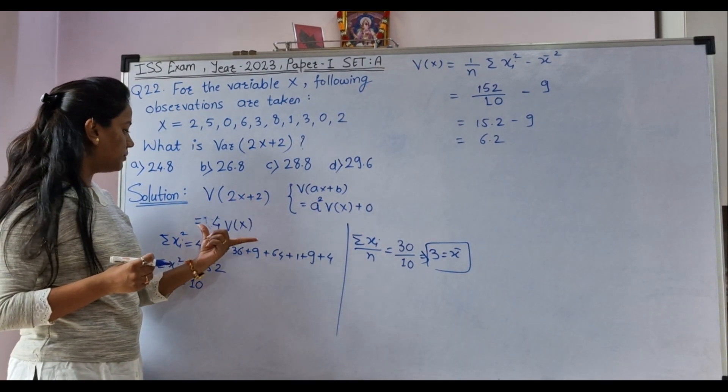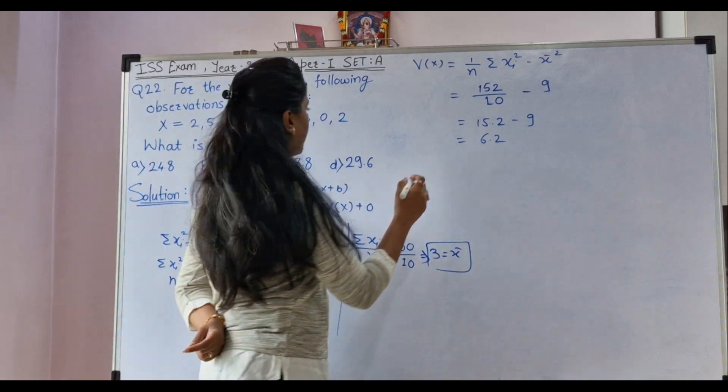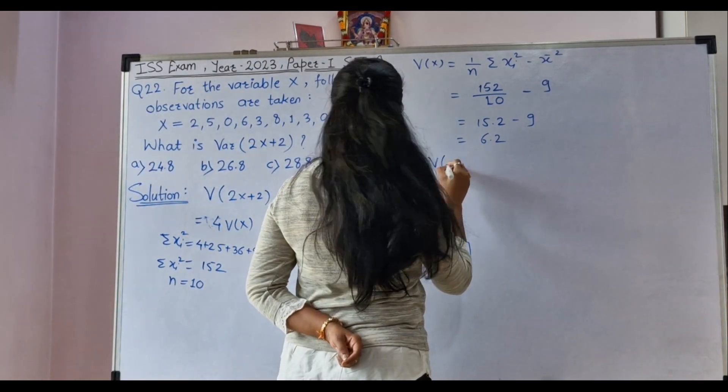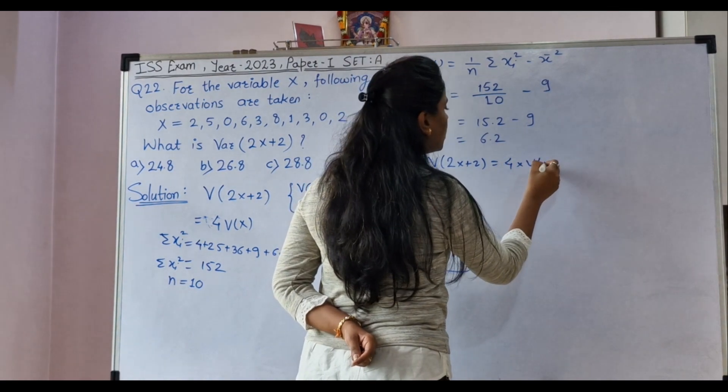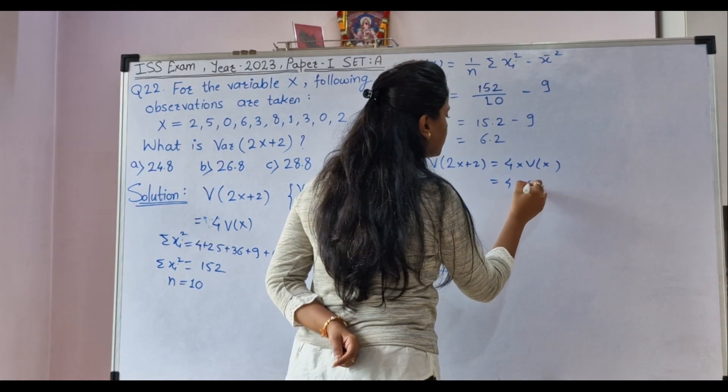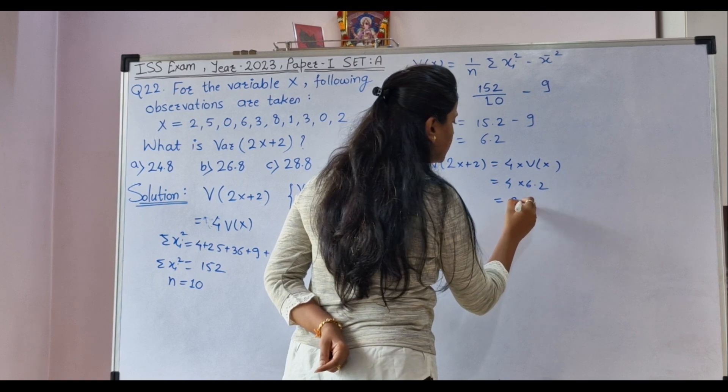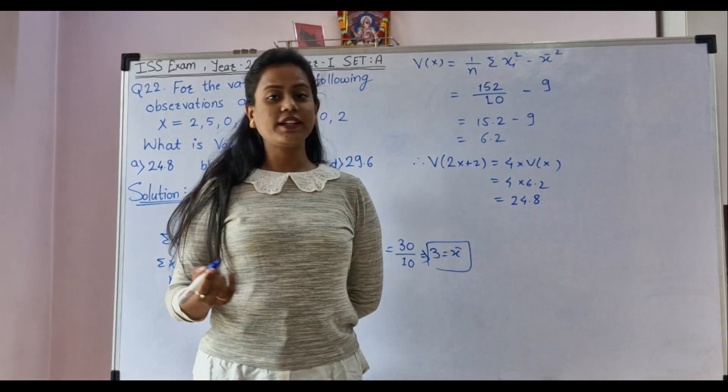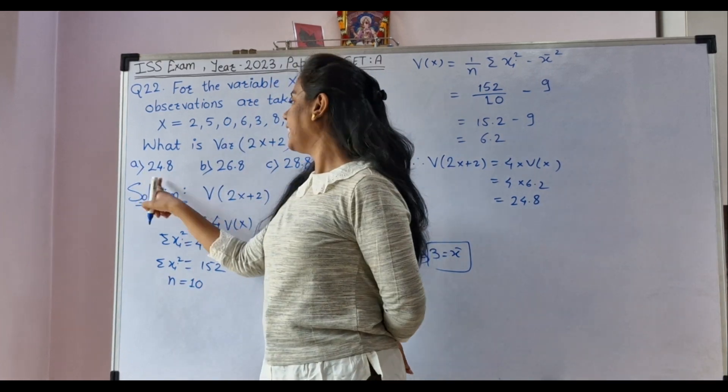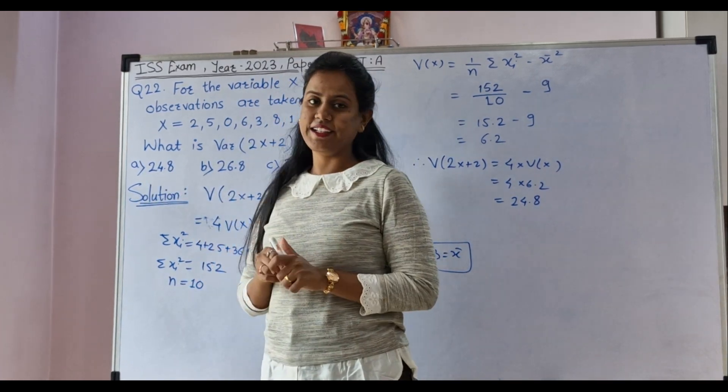We want to calculate this term. That means 4 times variance of X and therefore variance of 2X plus 2 equals to 4 into variance of X. 4 into 6.2 and it is 24.8. So, correct answer is option A, 24.8.